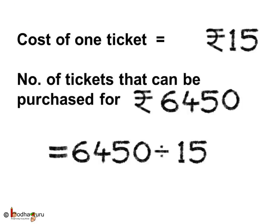Let us see what we need to find. As we know, the cost of one ticket is equal to 15 rupees. Now we need to find the number of tickets that can be purchased for rupees 6,450. Since we know the price of each ticket, we will divide the total amount by the cost of one ticket, which is rupees 15.